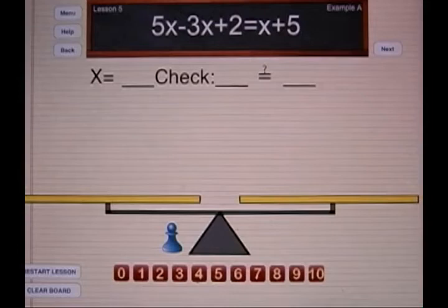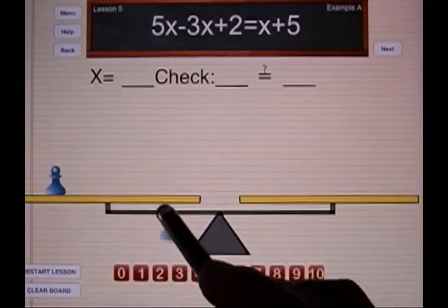Let's look at lesson number five. First, it says five x's, so I need five blue pawns.